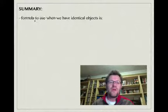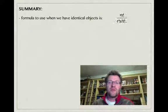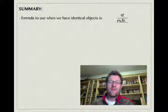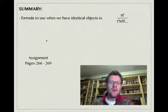In summary, the formula to use when we have identical objects is n factorial over r factorial, s factorial, t factorial. Remembering that n is your total number of objects, and r, s, and t are things that are repeated and exactly how many times something is repeated. Your assignment is on pages 266 to 269. Good luck and we'll see you in class.